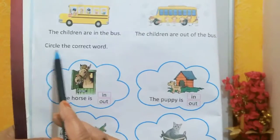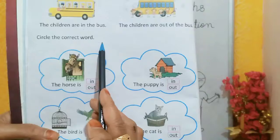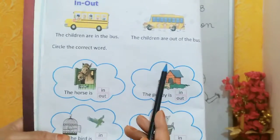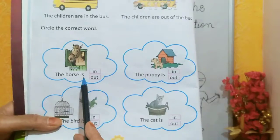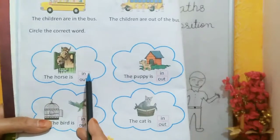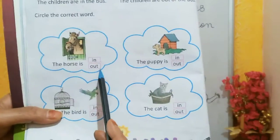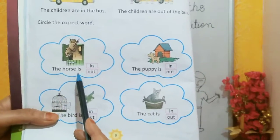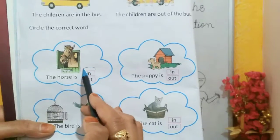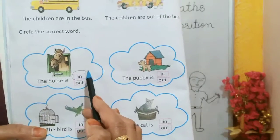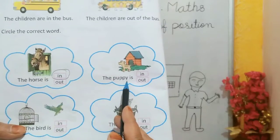Now, circle the correct word. Students, circle the correct word. The horse — H-O-R-S-E — is in or out? We have two boxes: first box IN, second box OUT. The horse is in the stable, so we circle IN — right on.